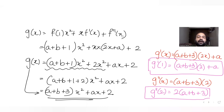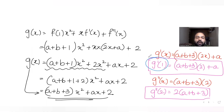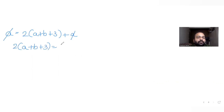Now I use the substitution conditions. Putting x=1 in g'(x): g'(1) = 2(a + b + 3)·1 + a = a. And putting x=2 in g''(x): g''(2) = 2(a + b + 3) = b. From the first equation: 2(a + b + 3) + a = a, so 2(a + b + 3) = 0, meaning a + b + 3 = 0, giving the first equation: a + b = −3.